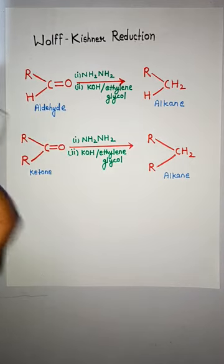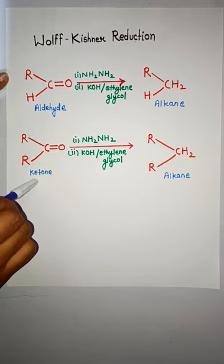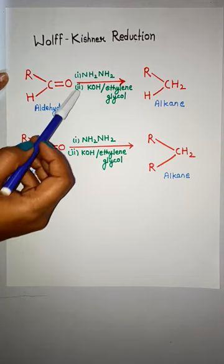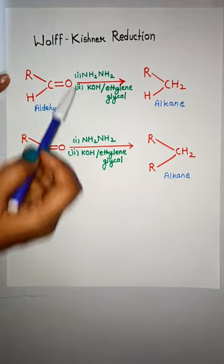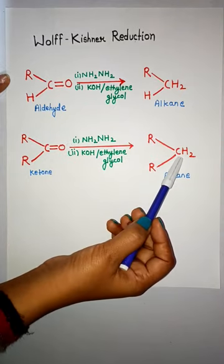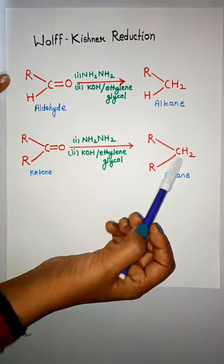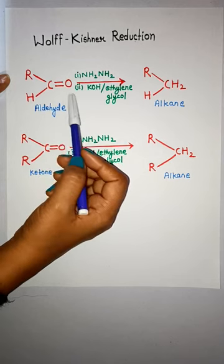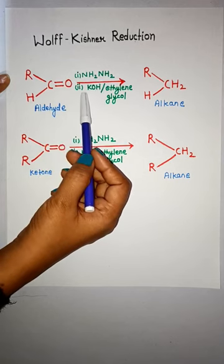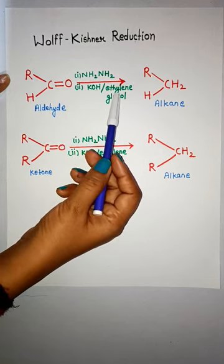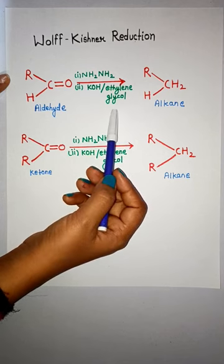This reaction is given by aldehyde and ketone. In this reaction, the carbonyl group of aldehyde and ketone is reduced to CH2 on treatment with hydrazine, followed by heating with potassium hydroxide in boiling ethylene glycol.